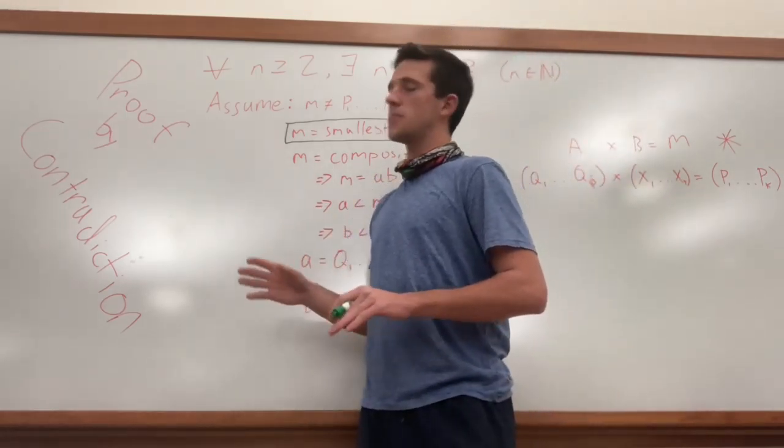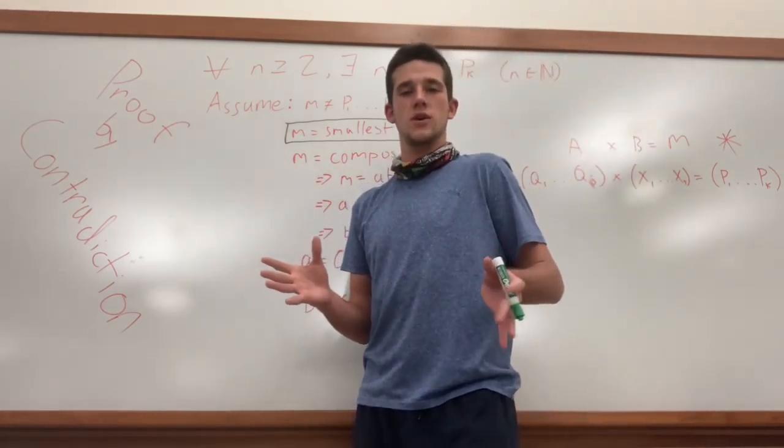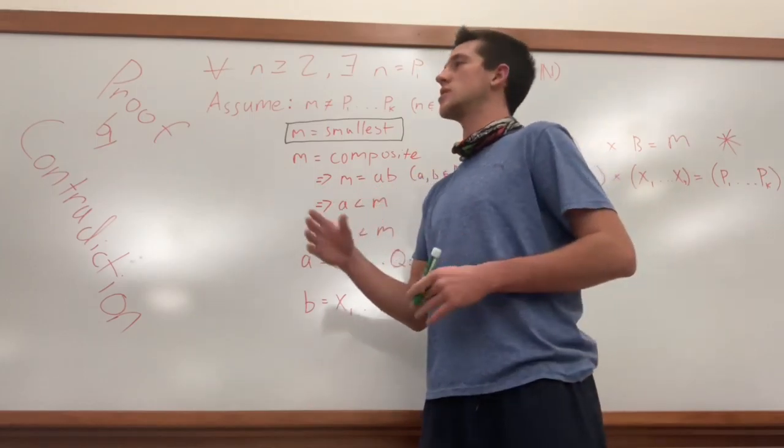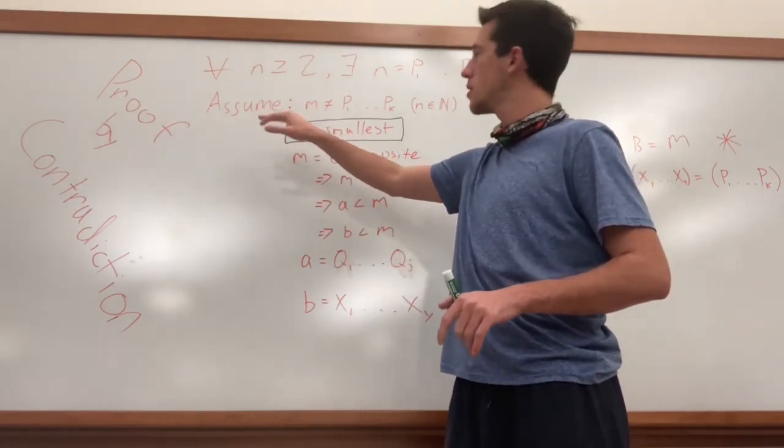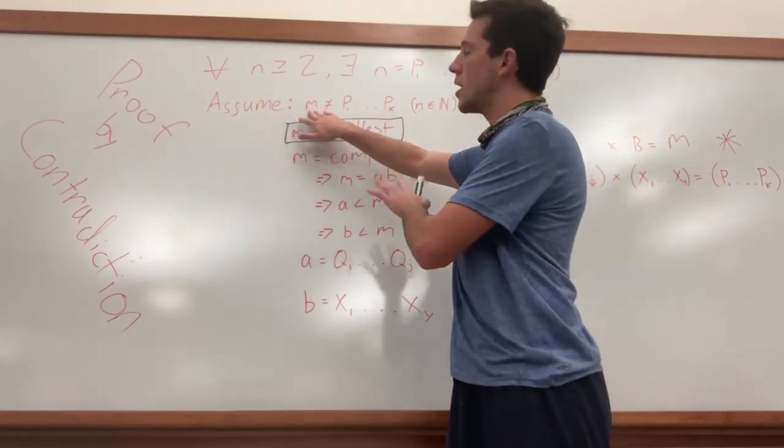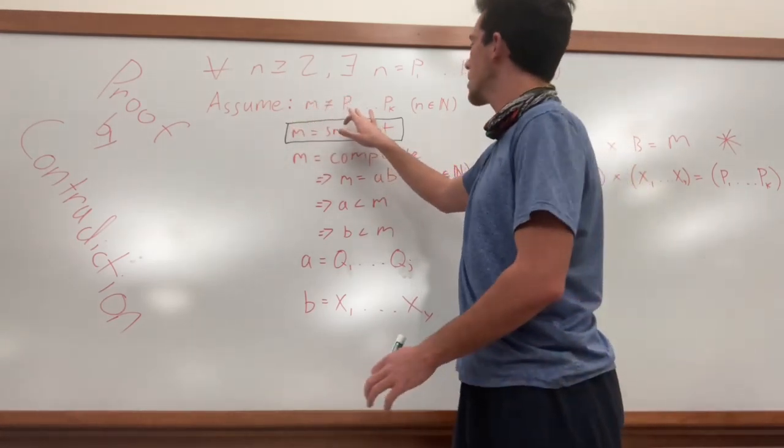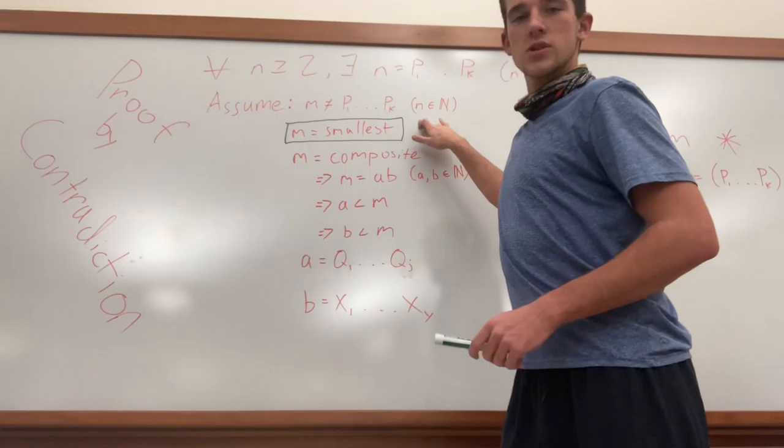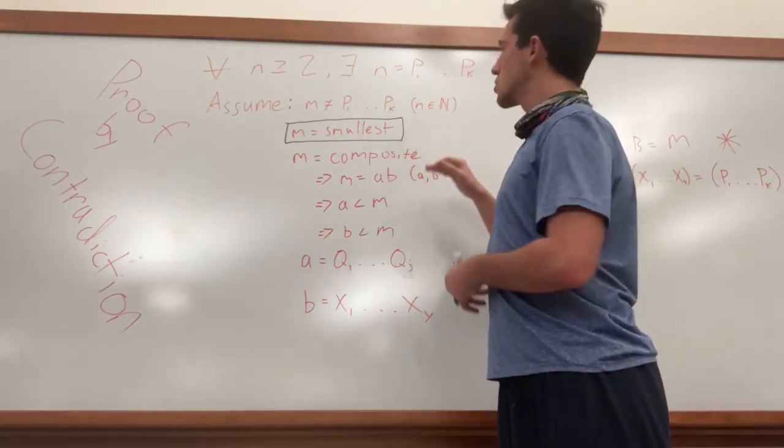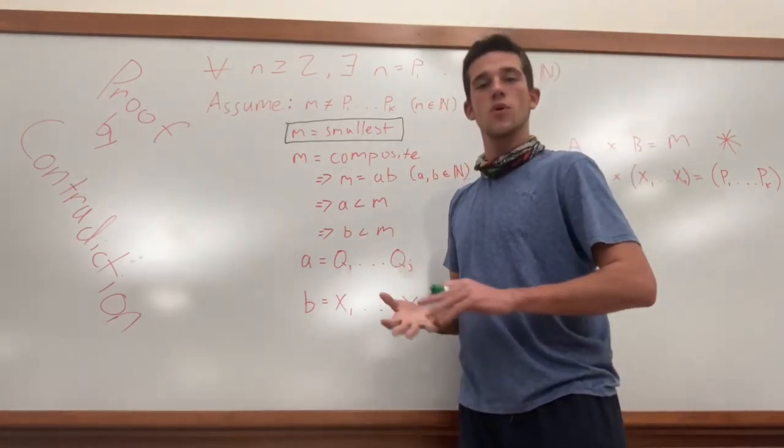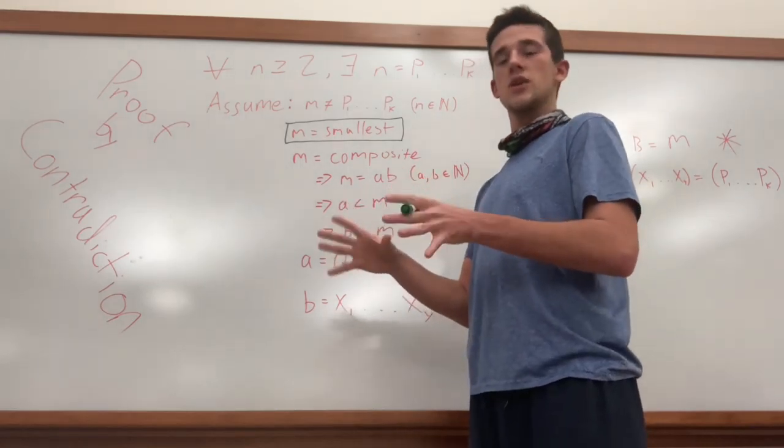For this proof, I'm going to be trying to prove it by contradicting itself. So I'm going to make the assumption that there is a number, and I'm going to represent that number by letter m. I'm going to say that m does not have a product of prime numbers. m is also a set of the natural numbers, which means that it's not negative, it's not a decimal or a fraction or anything like that. It's just a natural number.